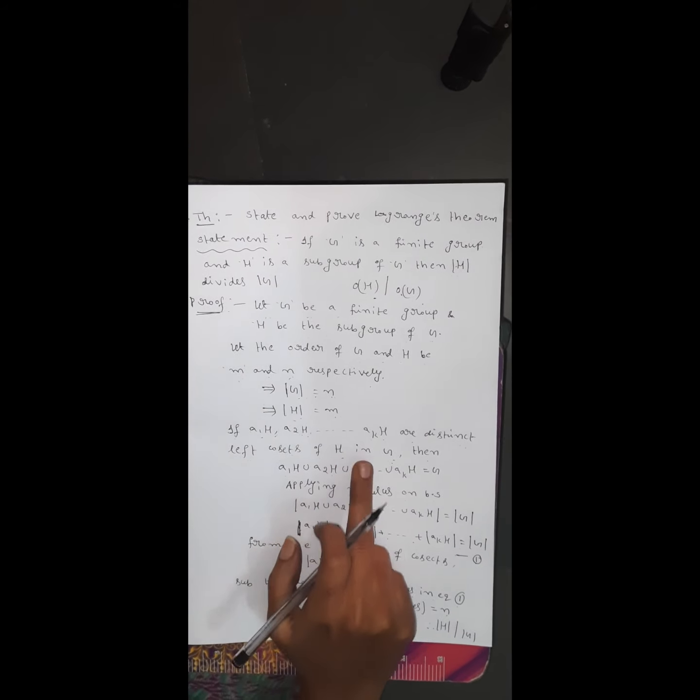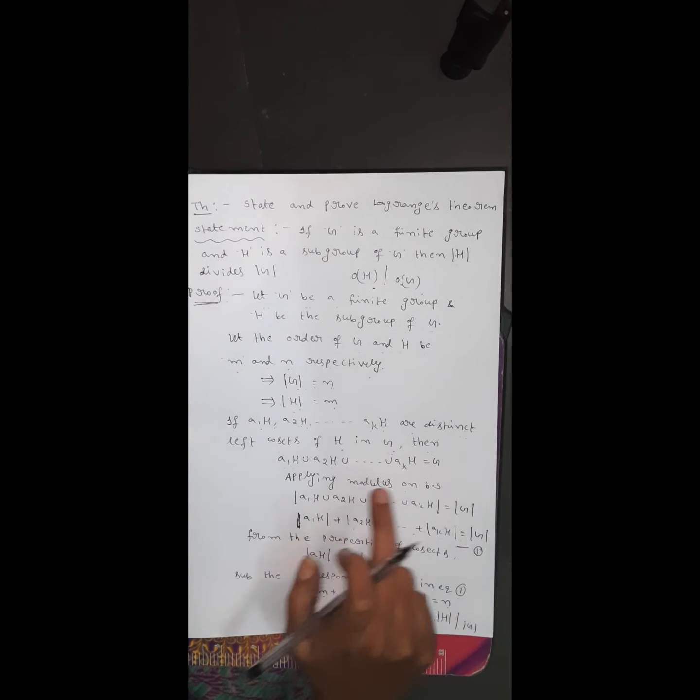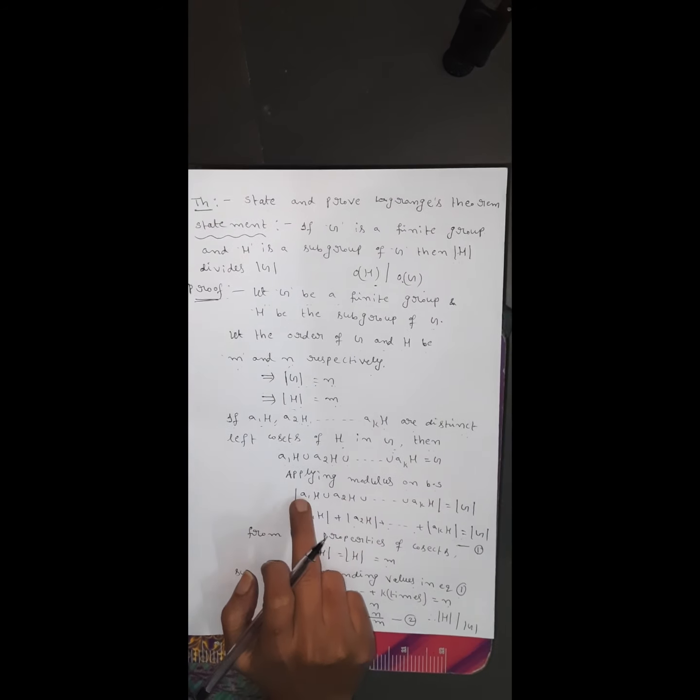Then the union of all left cosets: A₁H ∪ A₂H ∪ ... ∪ A_KH equals G. Applying modulus on both sides: |A₁H| + |A₂H| + ... + |A_KH| equals |G| equals N.